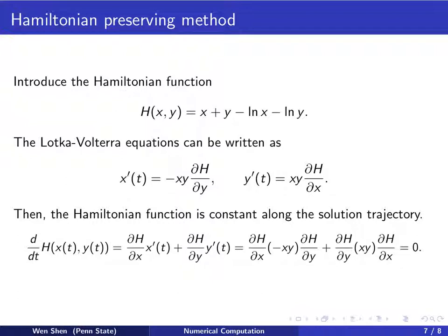Then, this Hamiltonian function is actually constant along solution trajectories. Indeed, you can verify this by the derivative, differentiating the Hamiltonian, putting x as a function of t, y as a function of t, and differentiate it in t. By the chain rule, we will have ∂H/∂x x' plus the second variable, ∂H/∂y y'. And then we plug in the expression x' and y' inside the equation. And we'll get this with a negative sign, and this with a positive sign. And we see that this term and this term exactly cancel each other, then it's zero. This means H as a function of x and y remain constant as t varies.